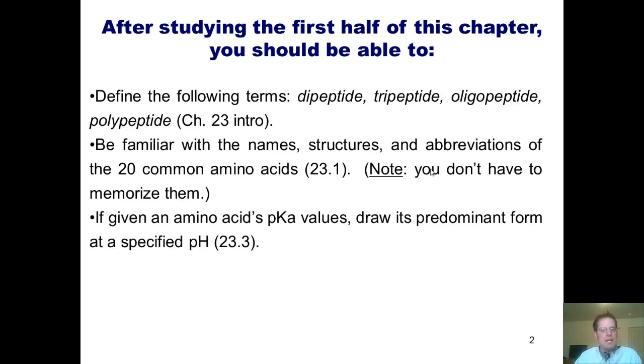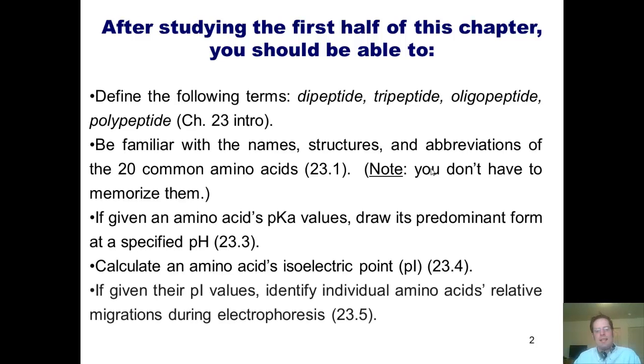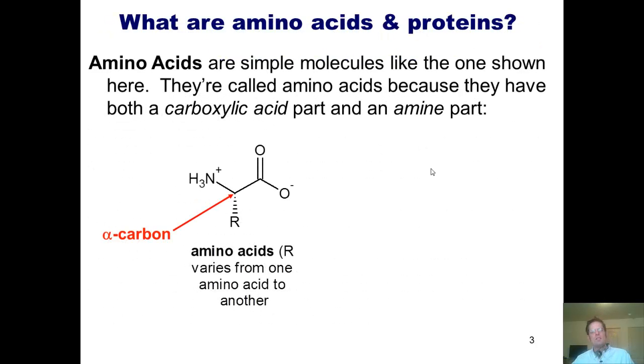Next, if given an amino acid's pKa values, draw its predominant form at a specified pH. Next, be able to calculate an amino acid's isoelectric point. And last, if given their pI values, that is, their isoelectric point values, identify individual amino acids relative migrations during electrophoresis.